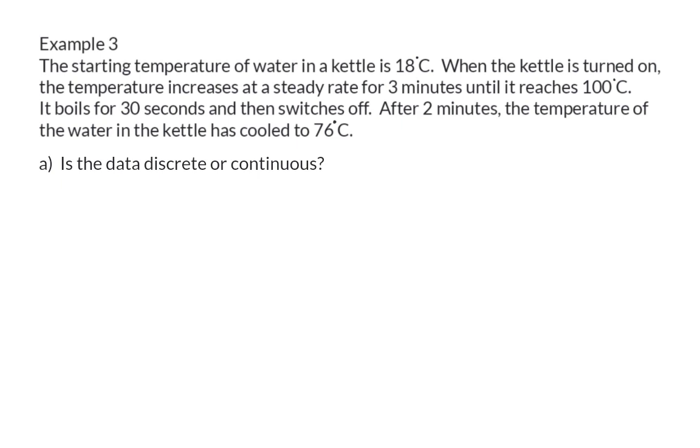Example 3. The starting temperature of water in a kettle is 18 degrees Celsius. When the kettle is turned on, the temperature increases at a steady rate for 3 minutes until it reaches 100 degrees. It boils for 30 seconds and then switches off. After 2 minutes, the temperature of the water in the kettle has cooled to 76 degrees Celsius. First question: Is the data discrete or continuous? Because the degrees are measured, the data is continuous.